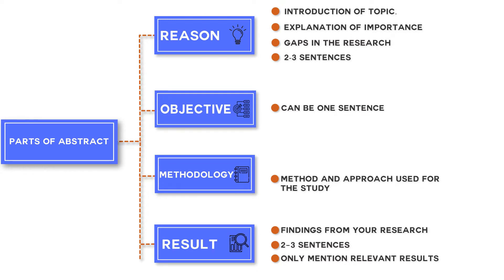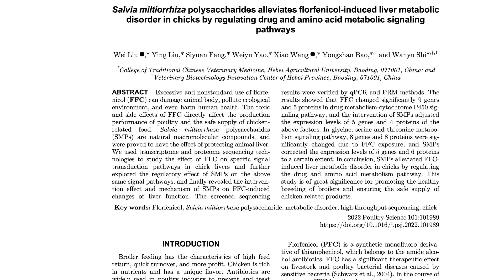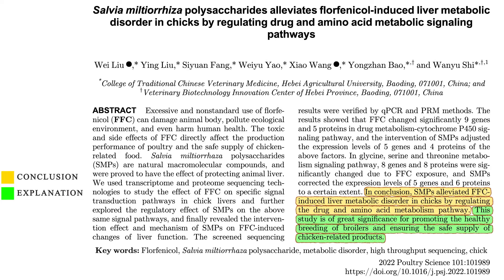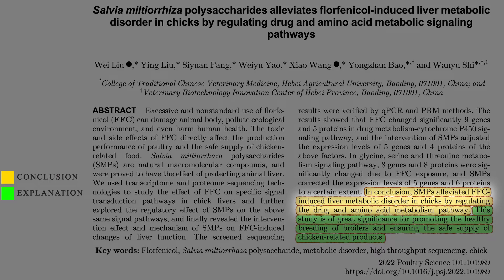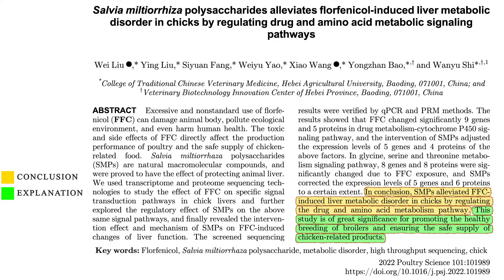And the last thing you need to include in your abstract is discussion and conclusion. You can make a target of two sentences for this section where the first sentence is for explanation of a result and the second sentence is for the conclusion or key message. Let's look at this example. You can see the discussion and conclusion section here in two sentences. The first sentence is about conclusion and the second sentence is about the implication of this study to the field.